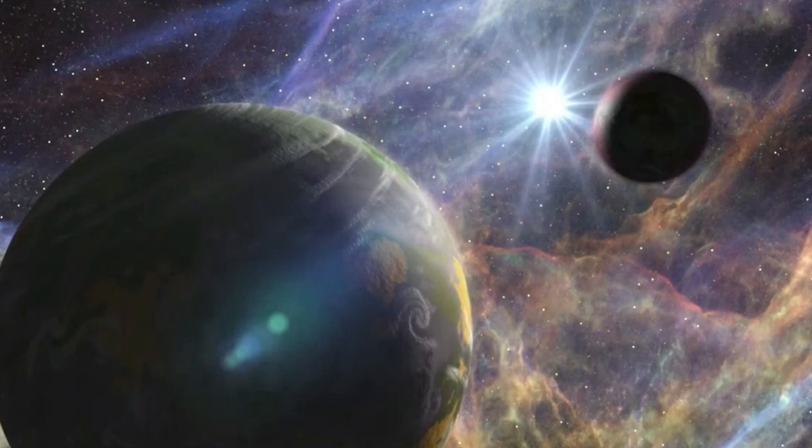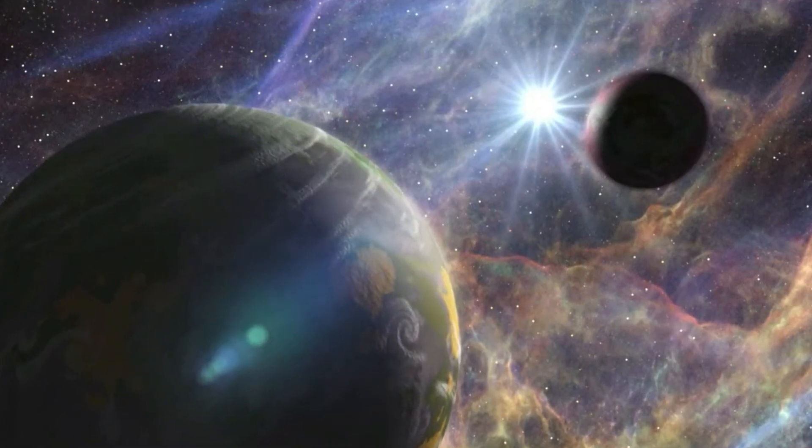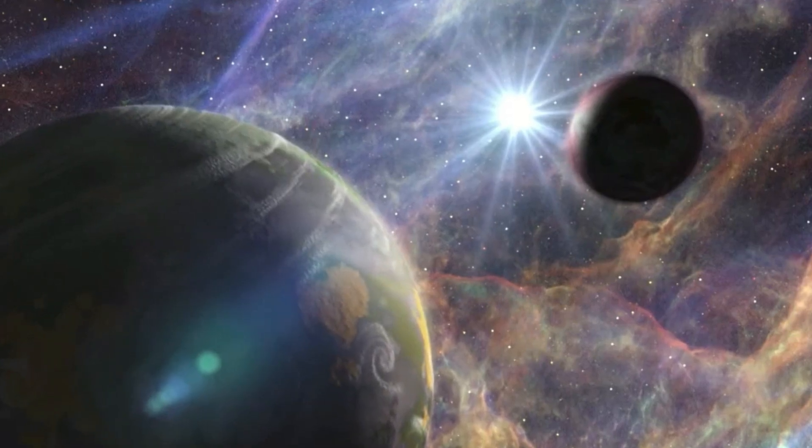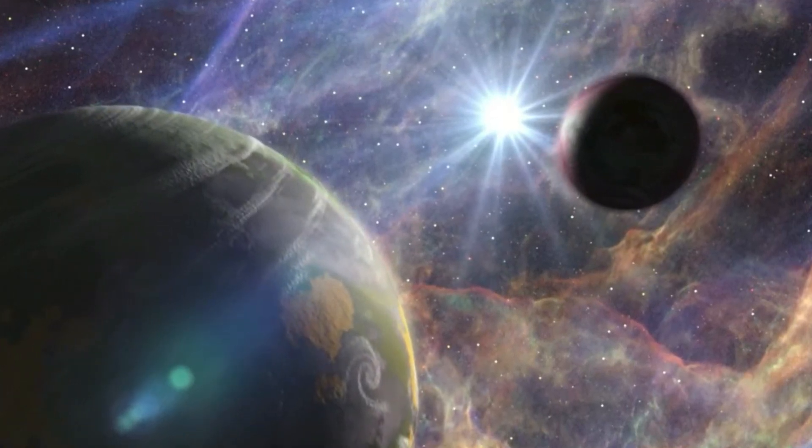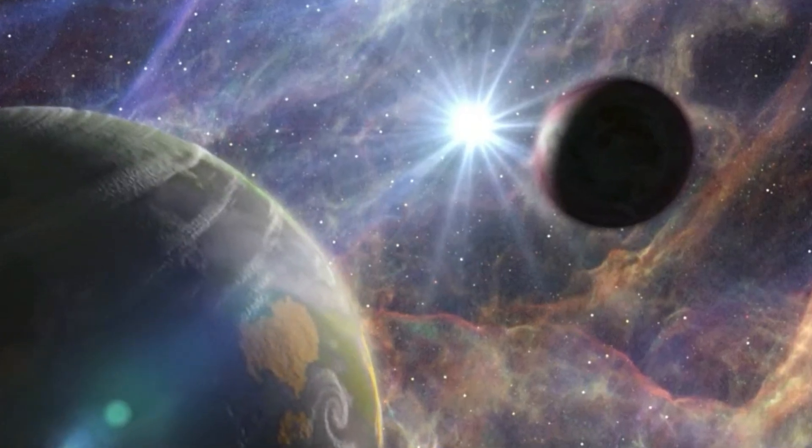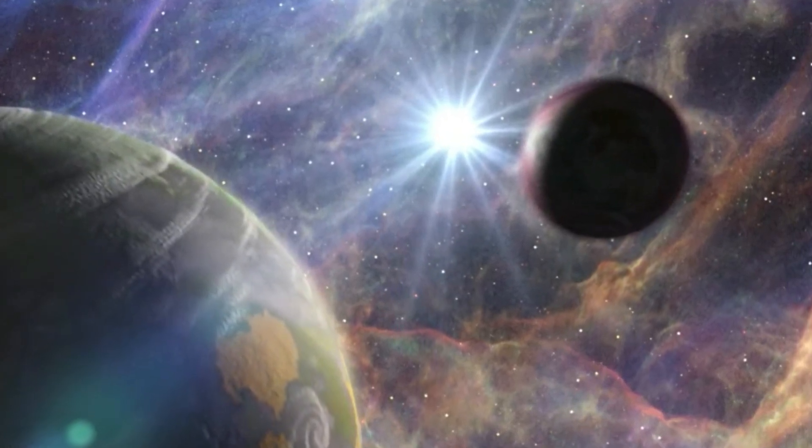The Kepler-51 system, located about 2,600 light-years from Earth, was already famous for its three SuperPuff planets. These planets are about the size of Saturn, but only a few times the mass of Earth, making them incredibly light.